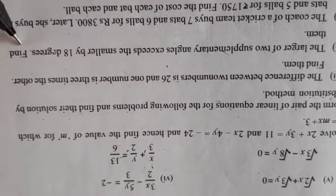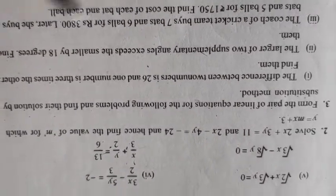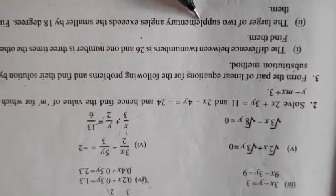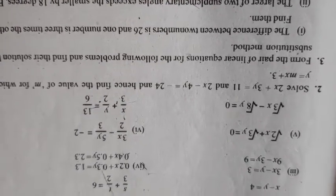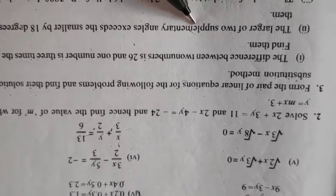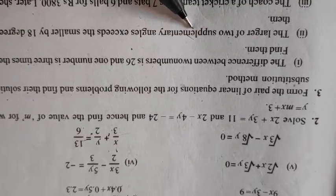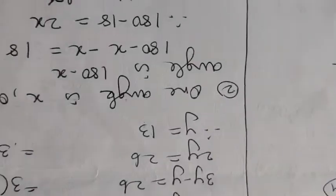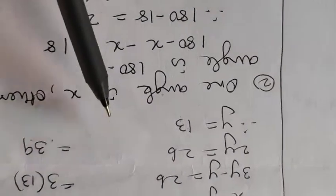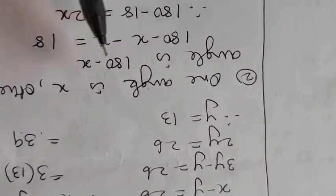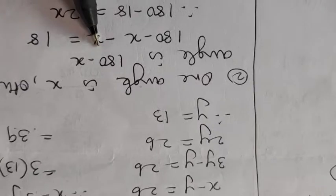Next question. The larger of the two supplementary angles exceed the smaller by 18. Find them. What are supplementary angles? When two angles sum is 180 they are said to be supplementary of each other.